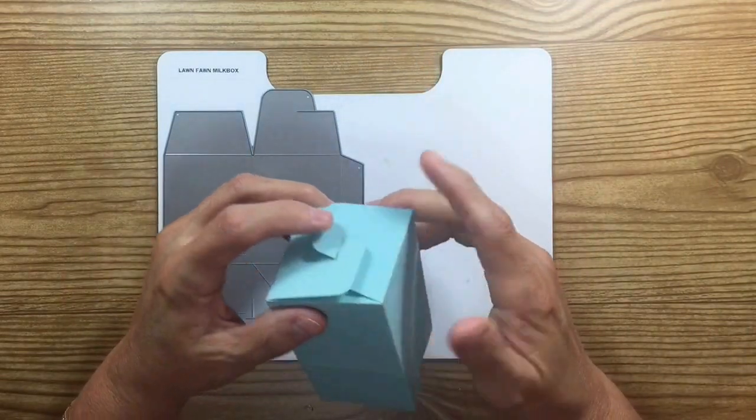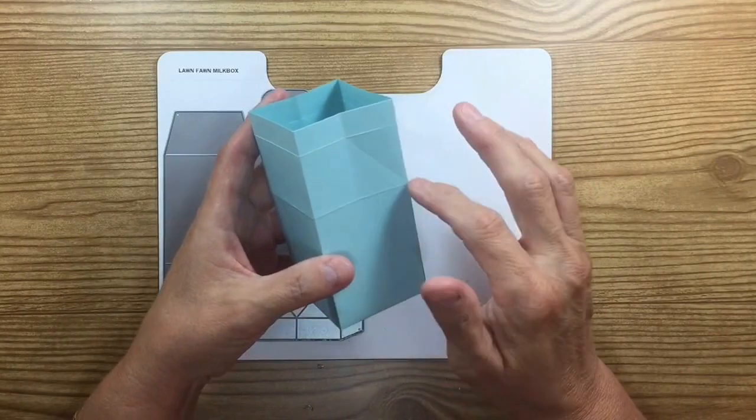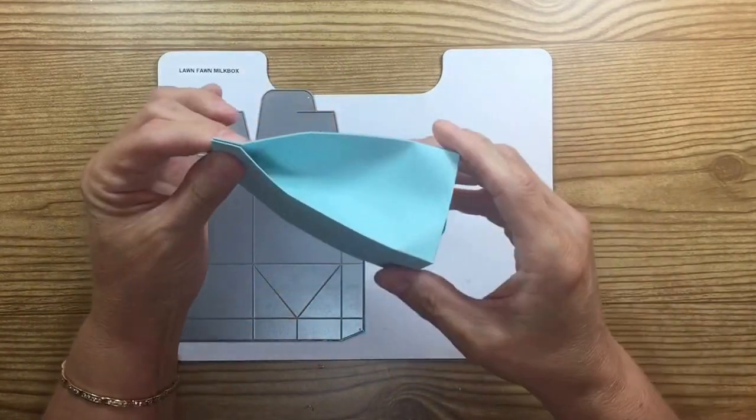It's going to close down the bottom like this and then it's got these little things on the side and it just closes up like that. It looks like a milk box.